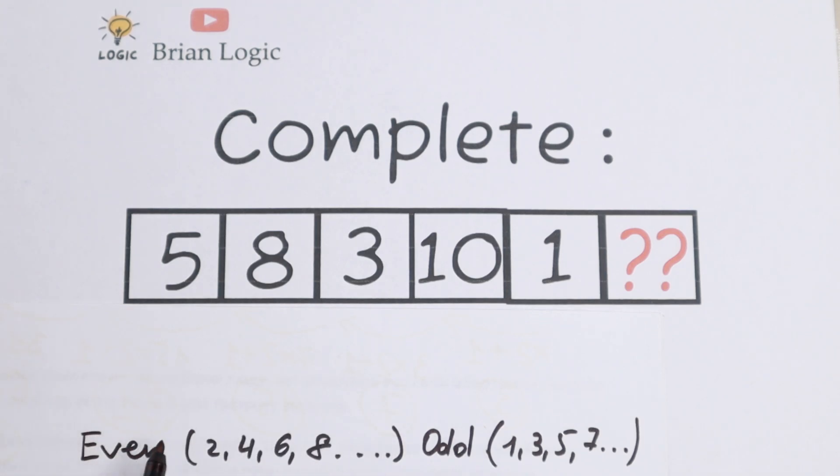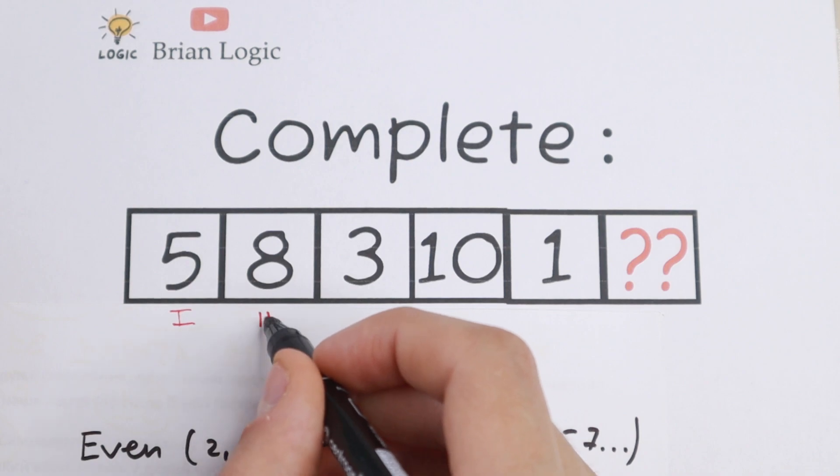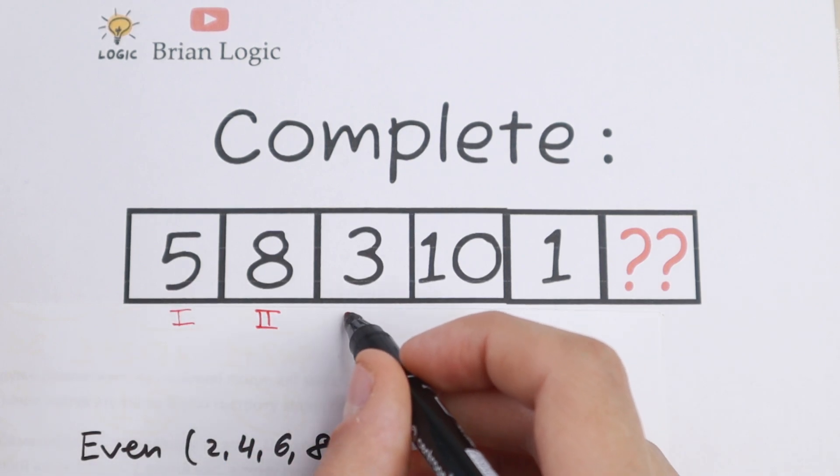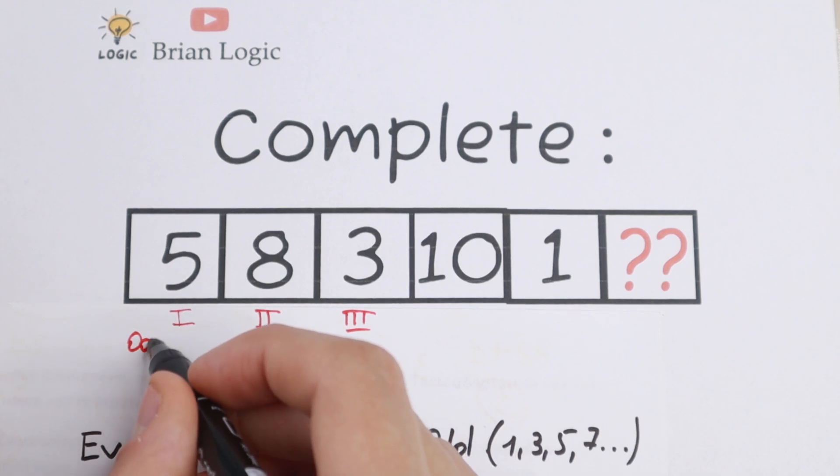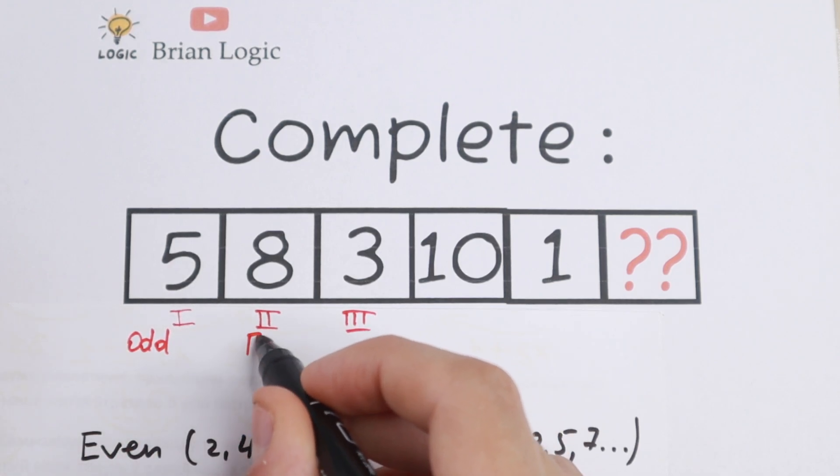Why I write these numbers? Because I see right now that this is our first number. This is odd number. Secondly is even number. Third number is odd as well. So this is our odd number. This is our even number.